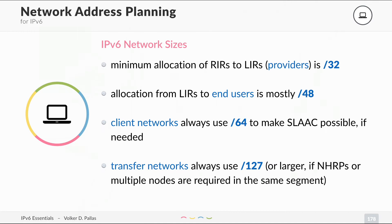The allocation from LIRs to end users is mostly slash 48 — it's still a lot of addresses. And for client networks, you should always use a slash 64, because you need a slash 64 to use SLAAC — that's stateless address auto-configuration. Whether you need it or not, always use a slash 64 for client networks.